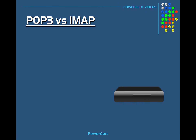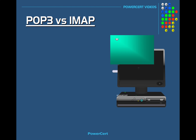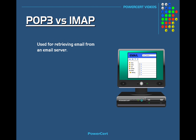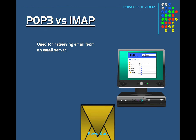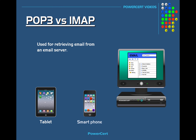In this video we're going to talk about a couple of different email protocols: POP3 and IMAP. These protocols are used for retrieving email from an email server. For example, if you're using an email client such as Microsoft Outlook, you would configure Outlook with either POP3 or IMAP to retrieve your email on a computer. You can also use these protocols on your tablet or smartphone.